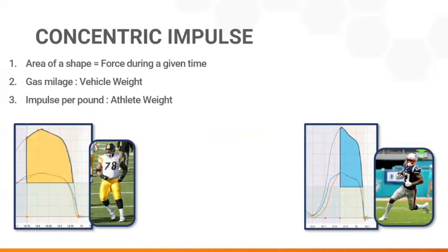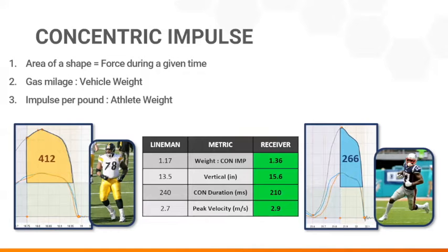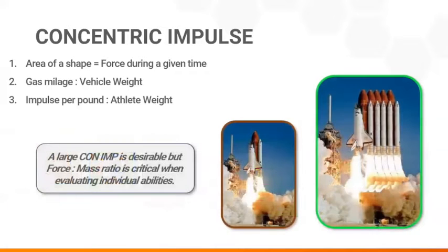During a vertical jump, a 350-pound lineman produced an impulse of 412, whereas a 190-pound receiver produced only 266. However, since the receiver's weight-to-concentric-impulse ratio was higher, he had a better vertical jump and did well in other key performance indicators.